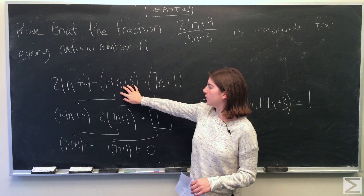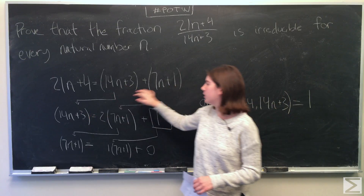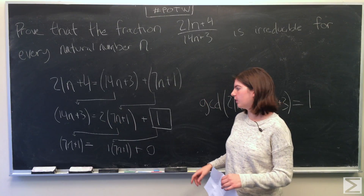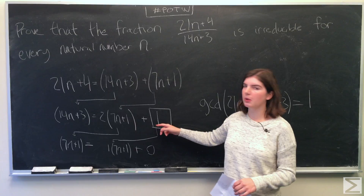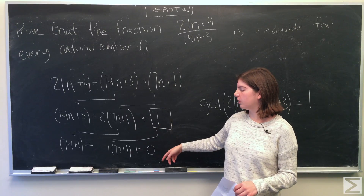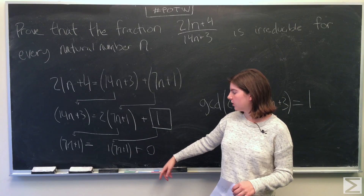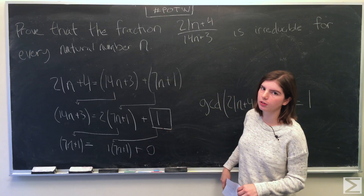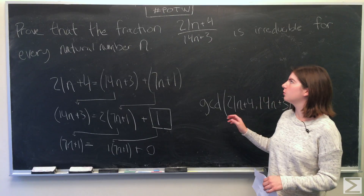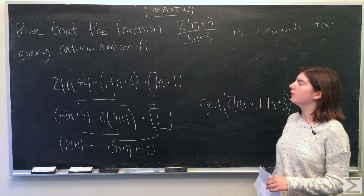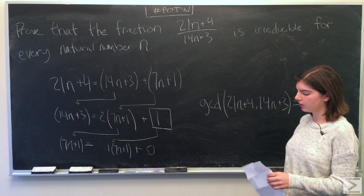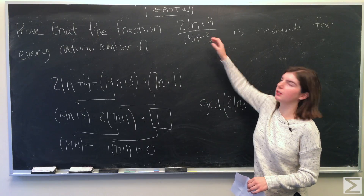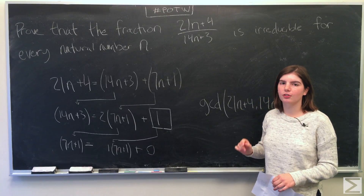And then you take this number and divide it by the remainder. So 14n plus 3 is equal to 2 times 7n plus 1, and you have a remainder of 1. You keep doing this until you get a remainder of 0. Our last remainder is 1, so the greatest common divisor between 21n plus 4 and 14n plus 3 is 1, which means the only positive factor between the two numbers is 1, and therefore the fraction is irreducible.